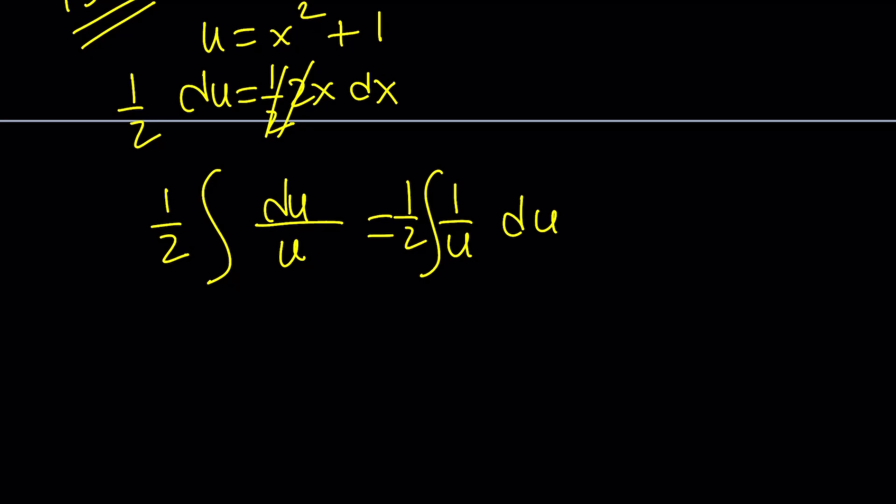It is ln. The power rule obviously does not apply here because if you apply power rule to this, then you get something like this. Negative 1 plus 1 is 0. U to the power of 0 divided by 0. That's definitely undefined. It's not like 0 to the power of 0 where we can talk about numbers. Anyways, that's a different story. I keep bringing that up. So this is going to become 1 half ln u.